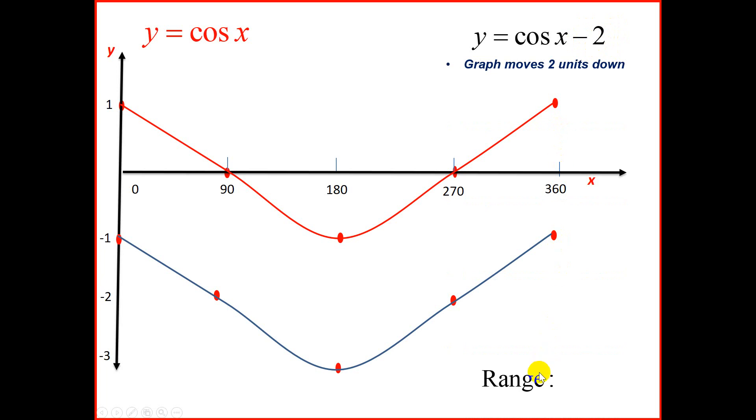So what is our range of this graph? The range of the original cos graph was minus 1 to 1, which means now that we're going to move the range 2 units down. And if we move it 2 units down, the negative 1 will move to negative 3. And the positive 1 moves to negative 1. So the range of this graph is minus 1 to minus 3.